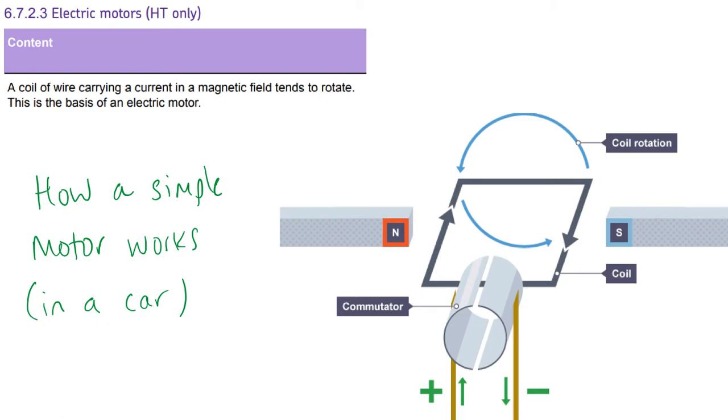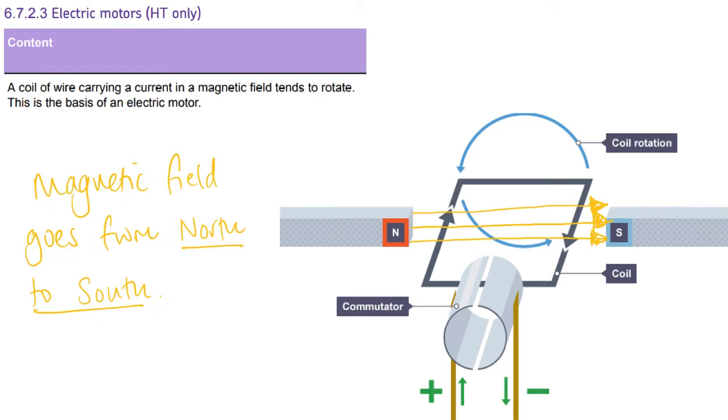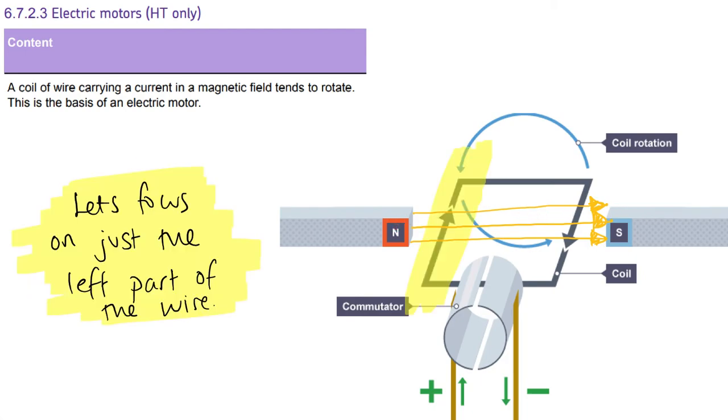Now on to the electric motor. So how does a simple motor work? So for example, in a car, we need to use Fleming's left-hand rule again to show the direction that things move. So let's start with our magnetic field. So we know it goes from north to south. We can see that here. So our first finger points towards the right. Now when dealing with motors, because we've got a current going up on this side and down on this side, because it loops around, we need to deal with half of the motor first, and then the other half in a moment. So let's focus on here.